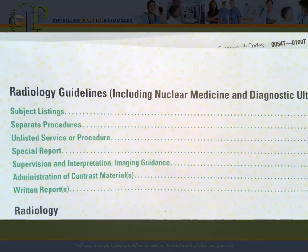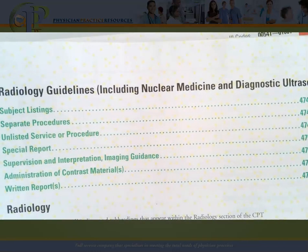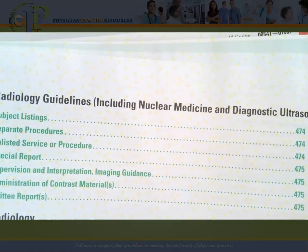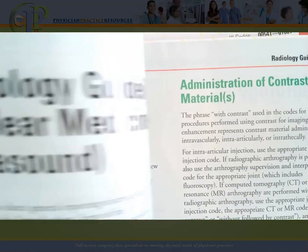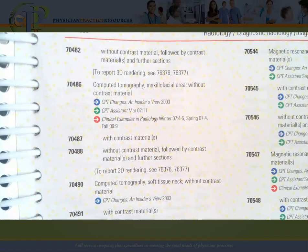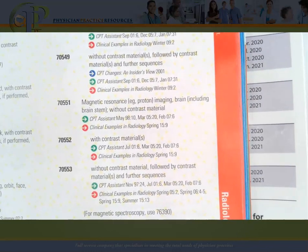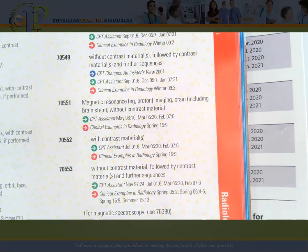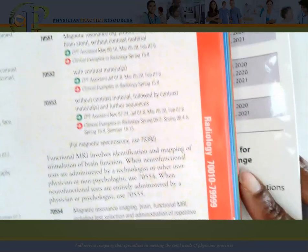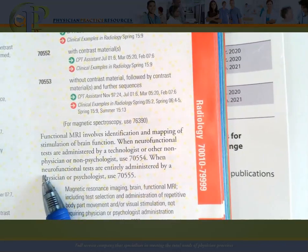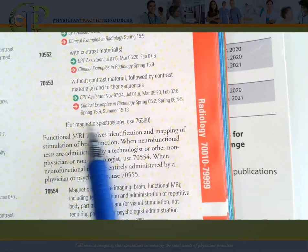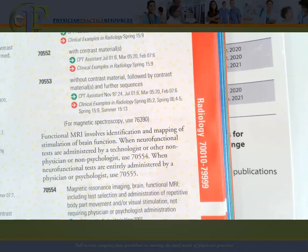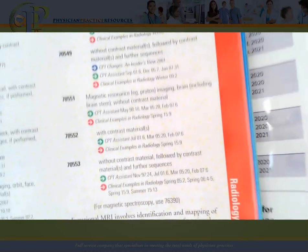The fourth area of Category 1 codes is radiology. Again, it starts with a table of contents and guidelines on green pages, followed by the codes themselves. An important point: in CPT we have section guidelines on the green pages, subsection notes in paragraph format before a family of codes, and parenthetical notes that provide information pertinent to the specific code family you're looking at.